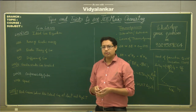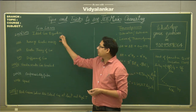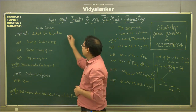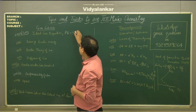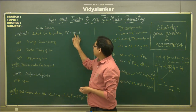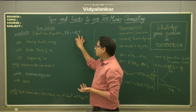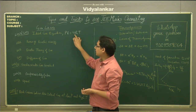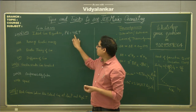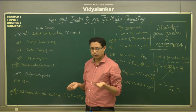Gas law is one of the most simplest and scoring topics. Many equations are asked based on the ideal gas equation. The ideal gas equation is PV = nRT. Sometimes they will play with this equation — pressure is given, volume is given, R is known, and temperature is known. They can ask you to find out the number of moles. So out of 4 parameters — pressure, volume, number of moles, and temperature — 3 are given and you find the 4th. Simple.